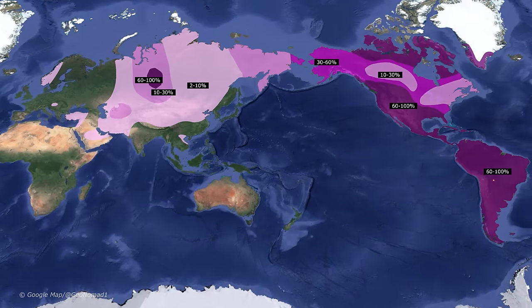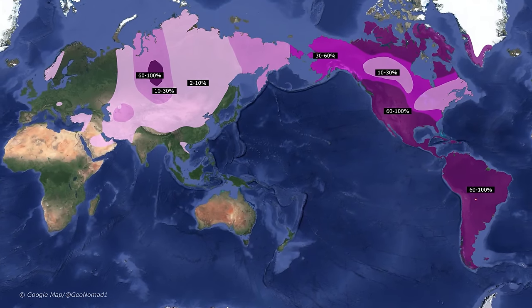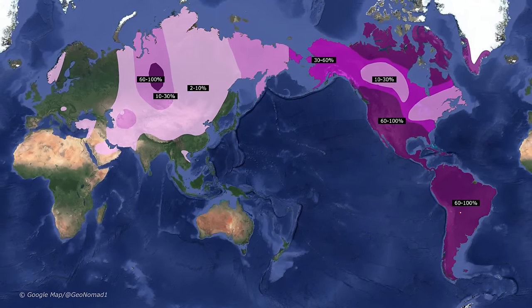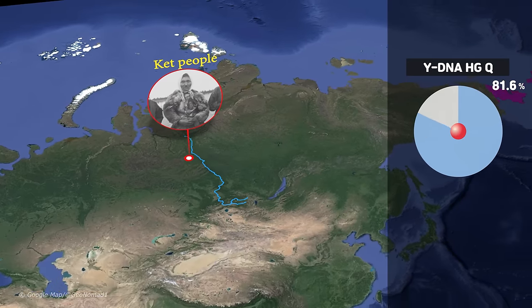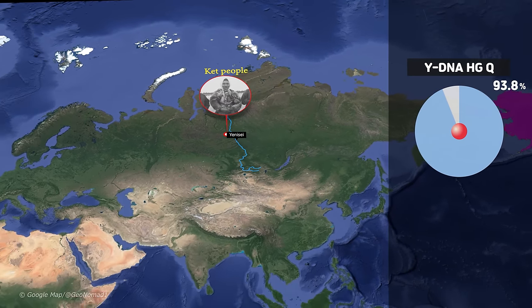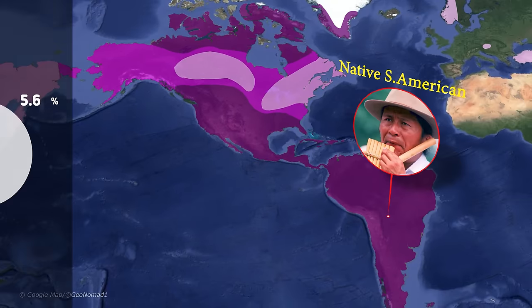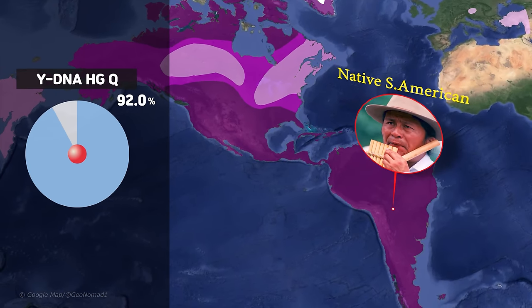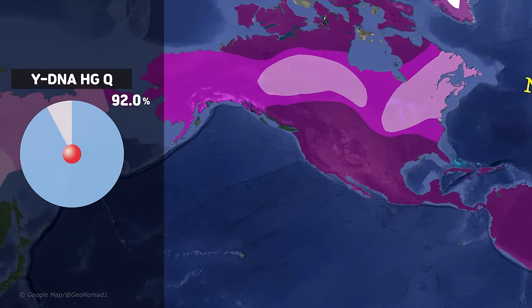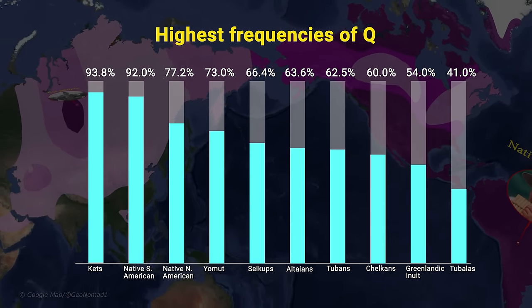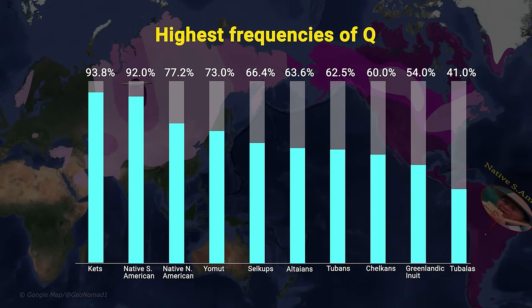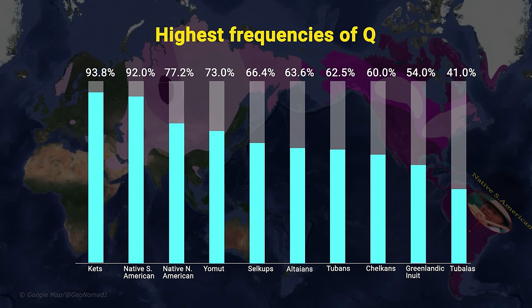The map shows that Y-chromosome haplogroup Q is now predominantly found among Native Americans and several Central Asian and Northern Siberian peoples. In particular, the Ket people, who live mainly in the middle and lower reaches of the Yenisei River in Central Siberia. Males of South American Aborigines belong to this haplogroup at a rate of more than 90%, and 77.2% of Native Americans are in this haplogroup. Among the Central Asian Turkmen tribes, 73% of Yomut males belong to this group.